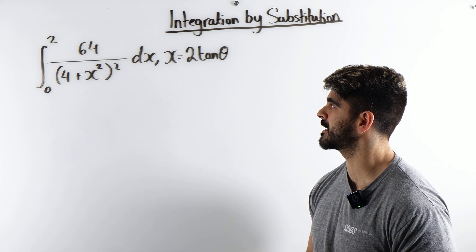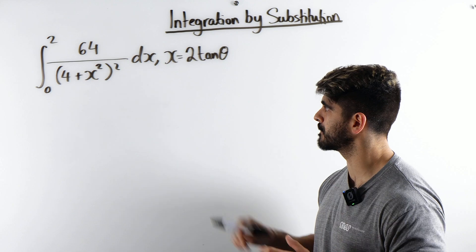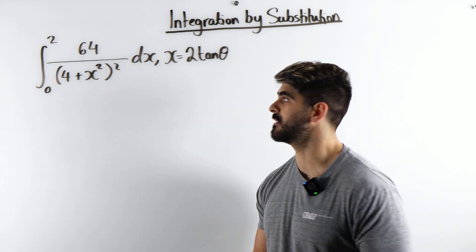Find the integral of 64 over (4 plus x squared) squared where the substitution you want to make is x equals 2 tan theta.